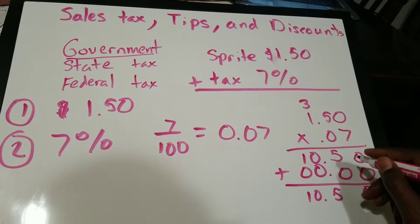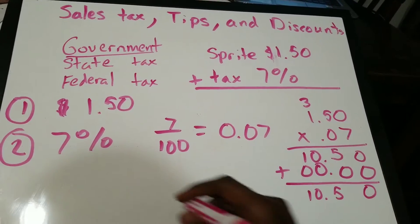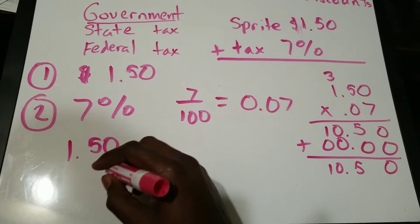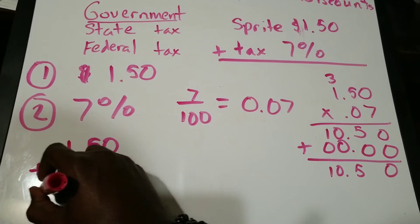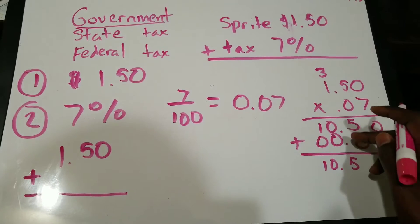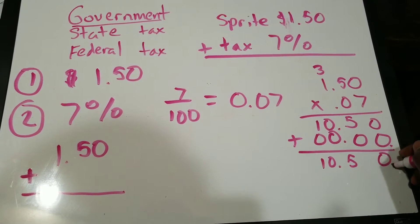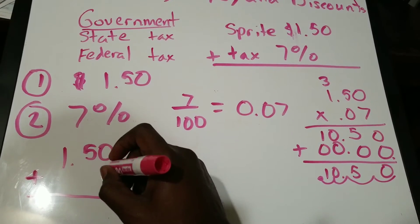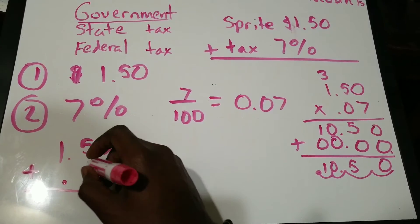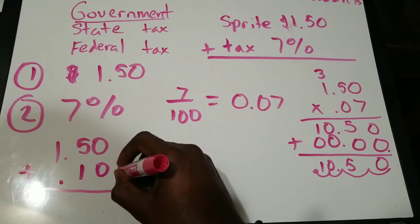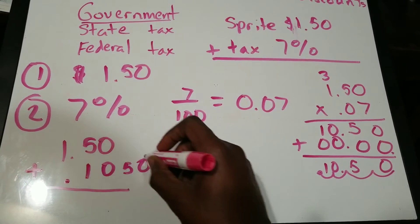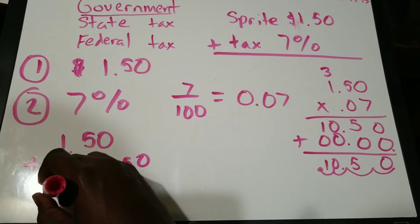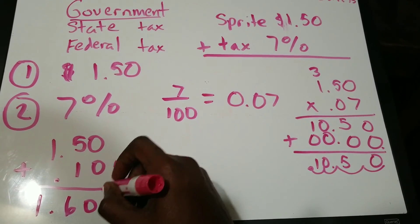So then we take that 1.50 and add it to 0.1050. Moving our decimals over — that's 4 decimal places — and adding them together, we get $1.60. You can round that.